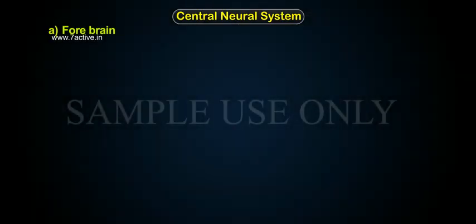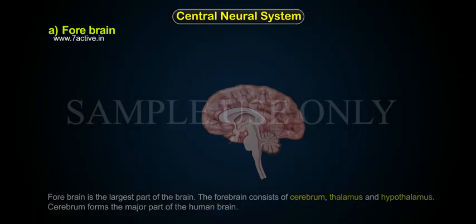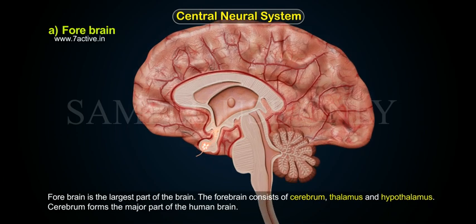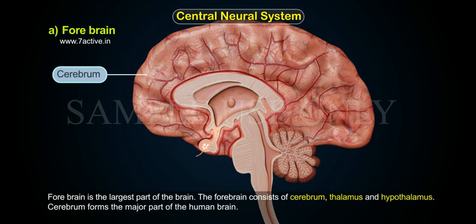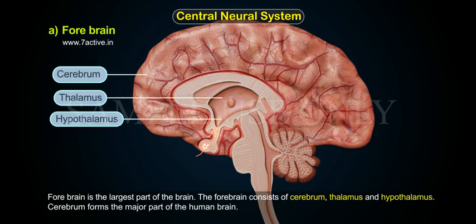A. Forebrain. Forebrain is the largest part of the brain. The forebrain consists of cerebrum, thalamus and hypothalamus.